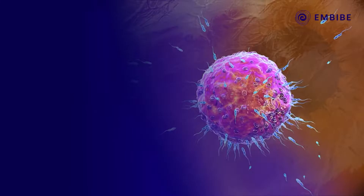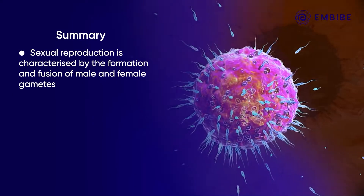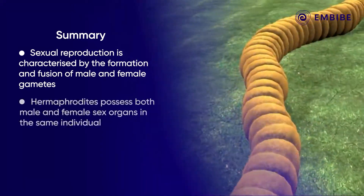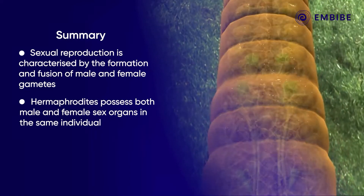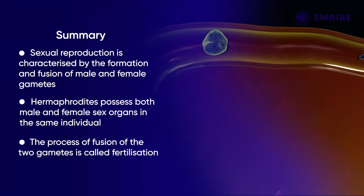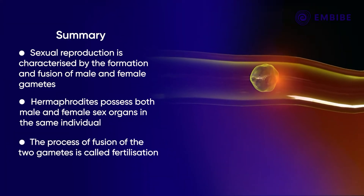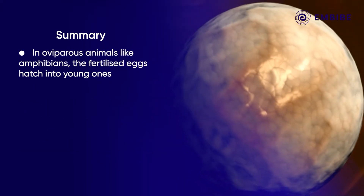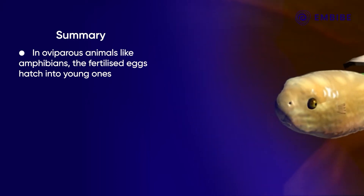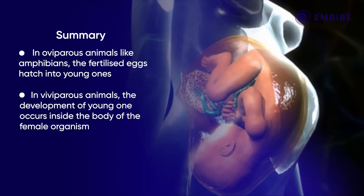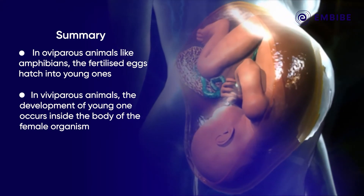Let's summarize. Sexual reproduction is characterized by the formation and fusion of male and female gametes. Hermaphrodites possess both male and female sex organs in the same individual. The process of fusion of the two gametes is called fertilization. In oviparous animals like amphibians, the fertilized eggs hatch into young ones. In viviparous animals, the development of the young one occurs inside the body of the female organism.